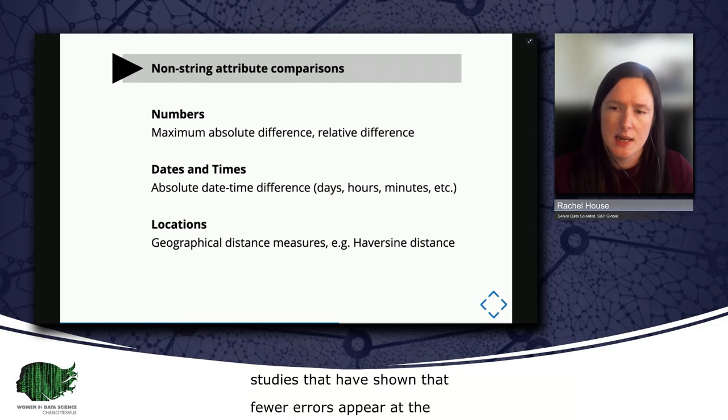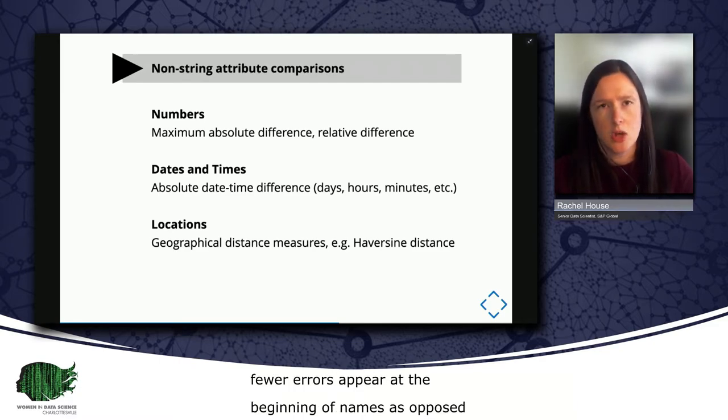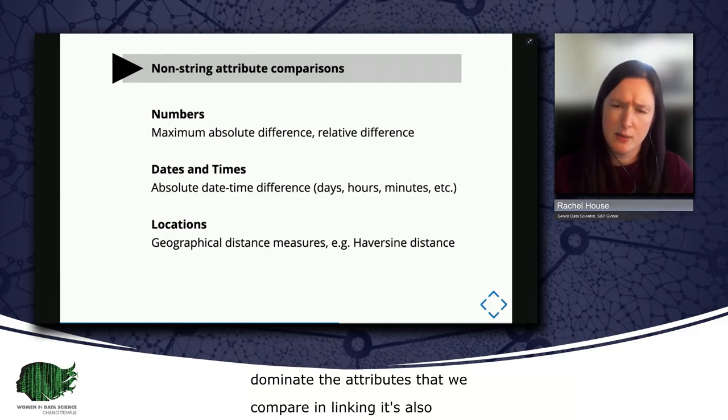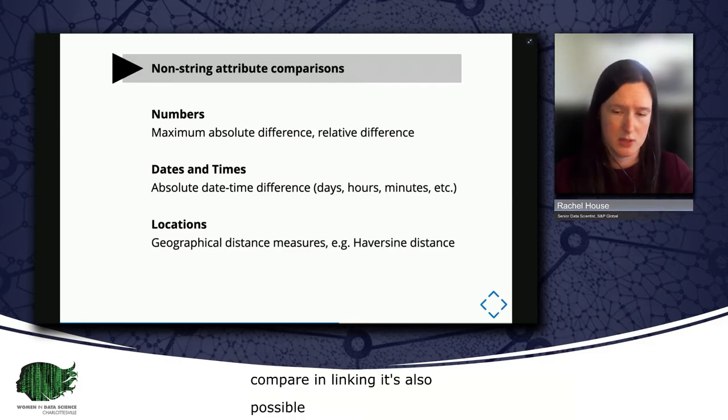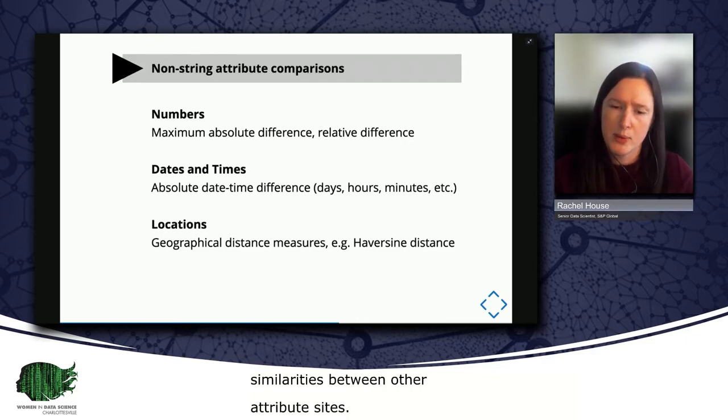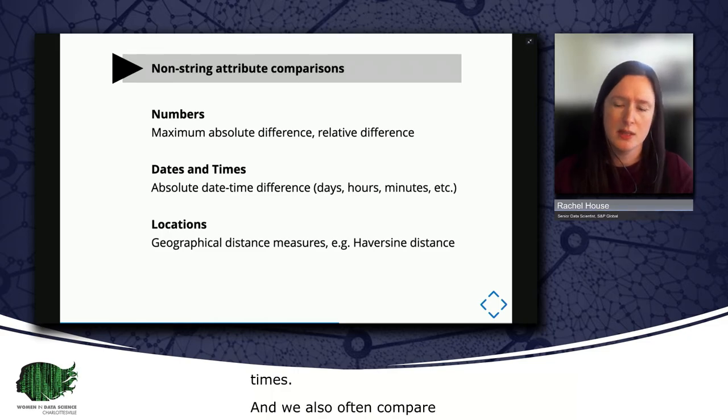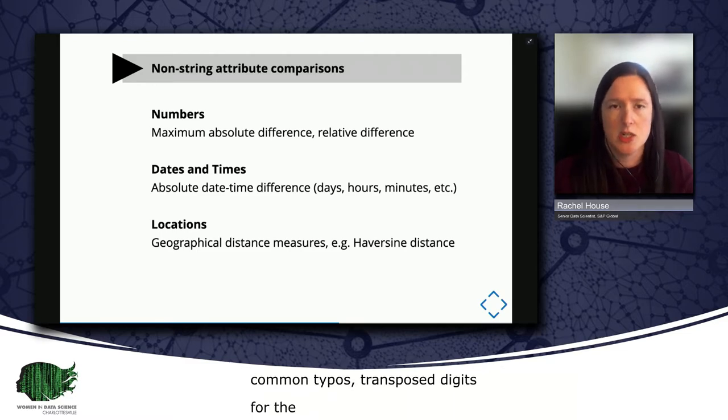While character sequences tend to dominate the attributes that we compare in linking, it's also possible to determine similarities between other attribute types such as numbers, dates and times, and locations. For numbers, typically we're interested in whether two numbers are within a max absolute or max relative difference, as well as what that difference is. For dates and times, we often also look at an absolute date-time difference between two attribute values. But we also often compare them in a way that accounts for common typos, like transposed digits for the month, such as 01 for January versus 10 for October. For locations, geographical distance measures like haversine distance are very useful.